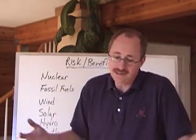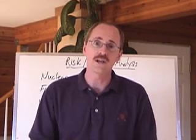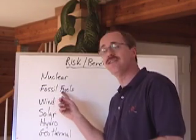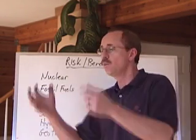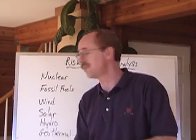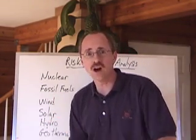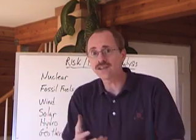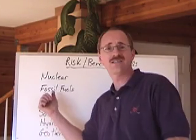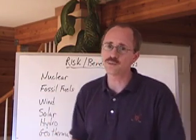Fossil fuels — coal, oil, or natural gas — are what we really use in the largest quantity on the planet. But fossil fuels can produce acid rain, because the sulfur that's usually in these fuels precipitates back to the ground as acidic deposition. Hot-burning car engines produce nitrogen oxides, which also contribute to acid rain. And then carbon dioxide that comes off leads to the greenhouse effect. So fossil fuels are pretty nasty, too.